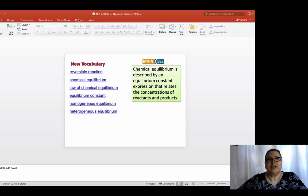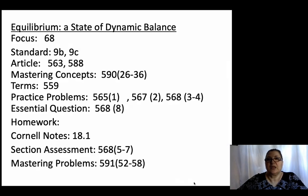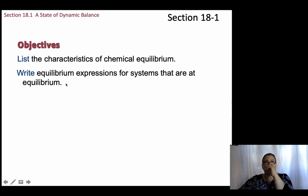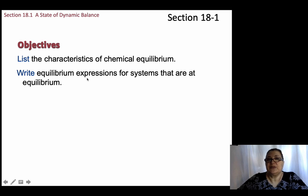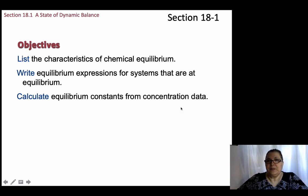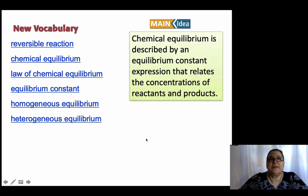This is Miss Risk. Today we're going over section 18.1, which is equilibrium. We're going to find the characteristics of chemical equilibrium, write the equilibrium expression, and calculate the equilibrium constant from concentration.